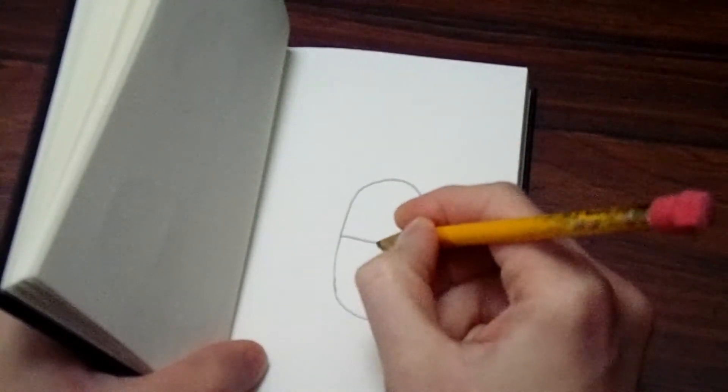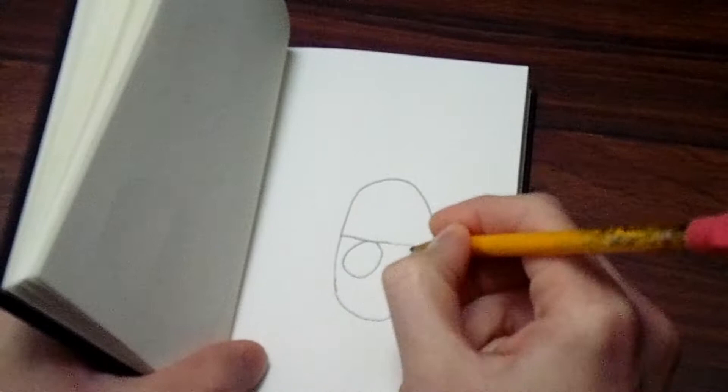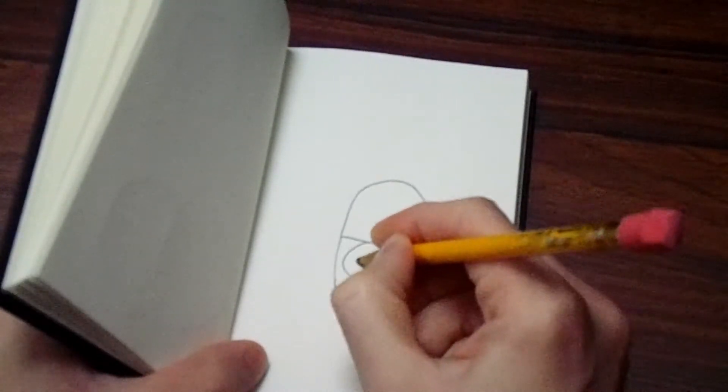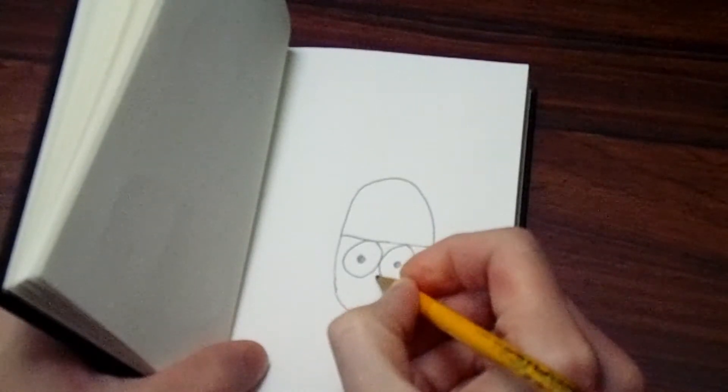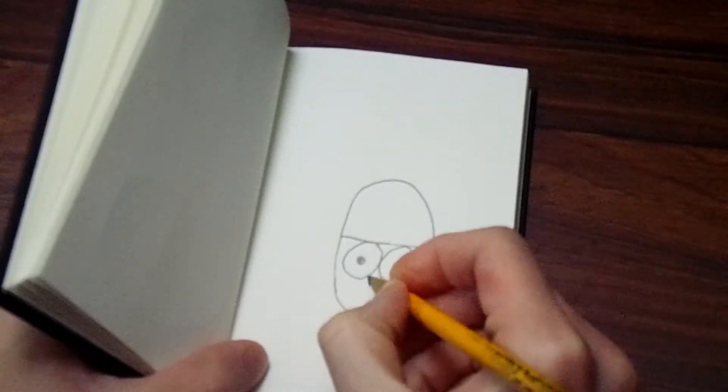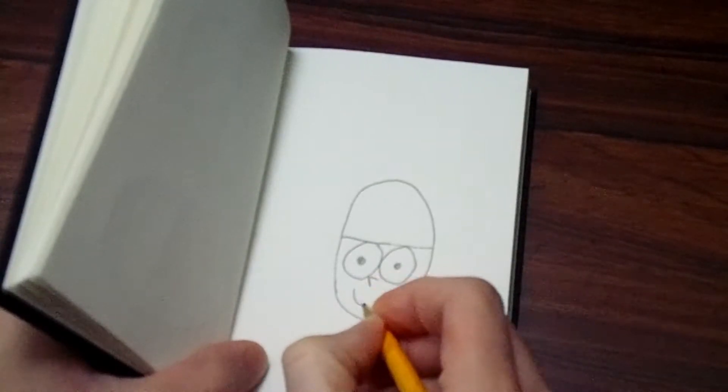So we're going to draw two eyes underneath the hair, with some circles in the middle, her pupils. And then we'll give her a cute little triangle nose, and a nice happy face.